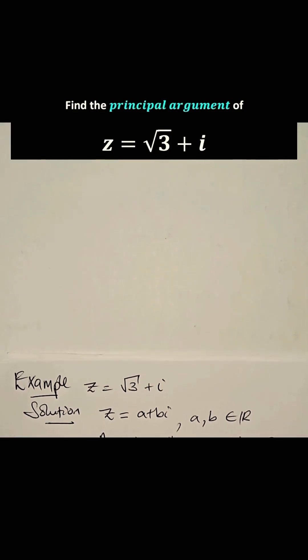Z can be written as a plus bi, where a and b are elements of all the real numbers.